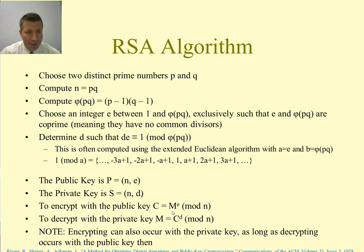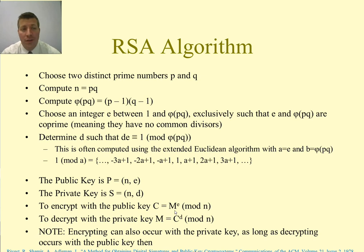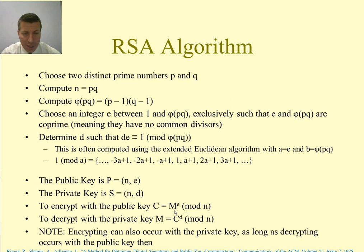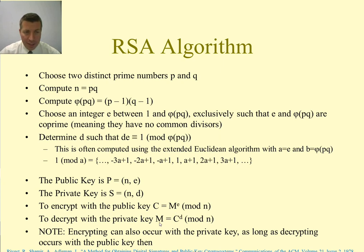To encrypt: ciphertext c = m^e mod n, where m is the plaintext message. You could represent plaintext as ASCII values, encrypting each character individually, or group characters together — both sides just need to agree on the representation. To decrypt: plaintext m = c^d mod n, taking the ciphertext raised to the dth power and modding by n.